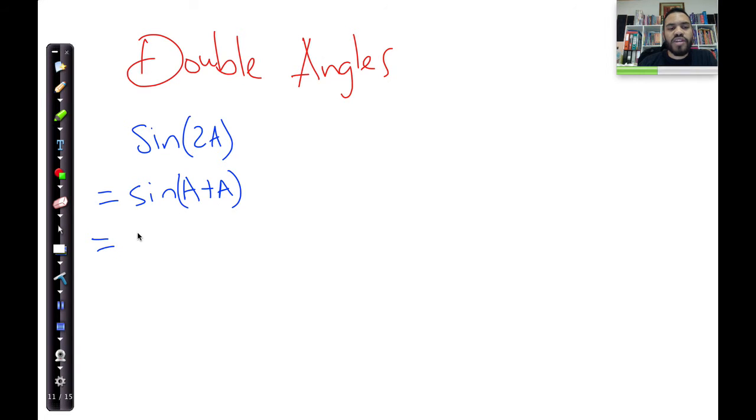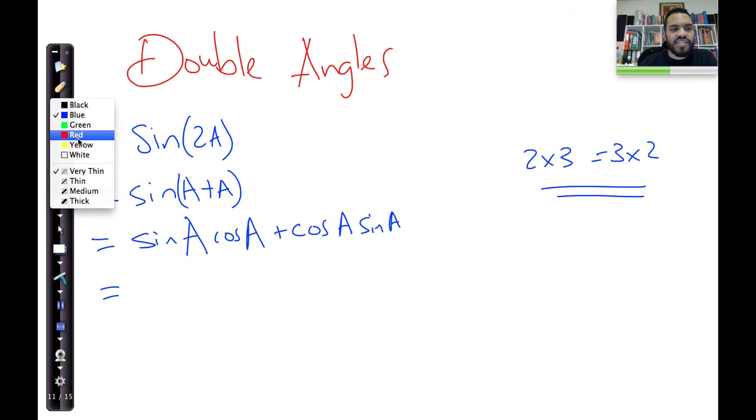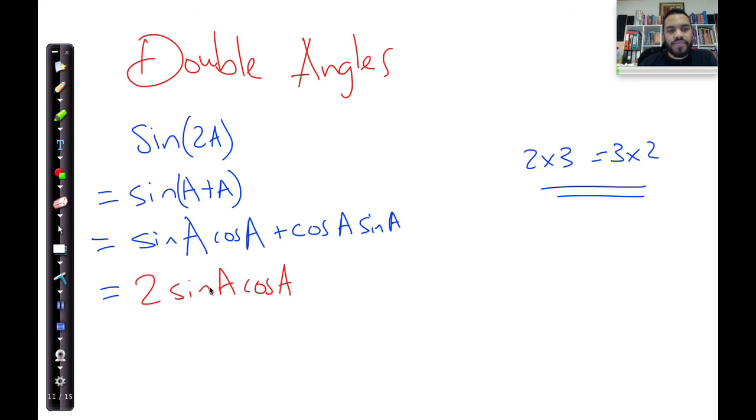And this I can use my compound angle identity. I can say it's sine cos plus cos sine. And it's a, a, and there we go. Now sine a cos a is the same as cos a times sine a, because that's the same as saying 2 times 3 is equal to 3 times 2. This is commutative, right? And so what I can do over here is I can say, well, I've got two of that now. So my solution is just 2 sine a times cos a. And that's an identity that sine 2a is equal to 2 sine a cos a.